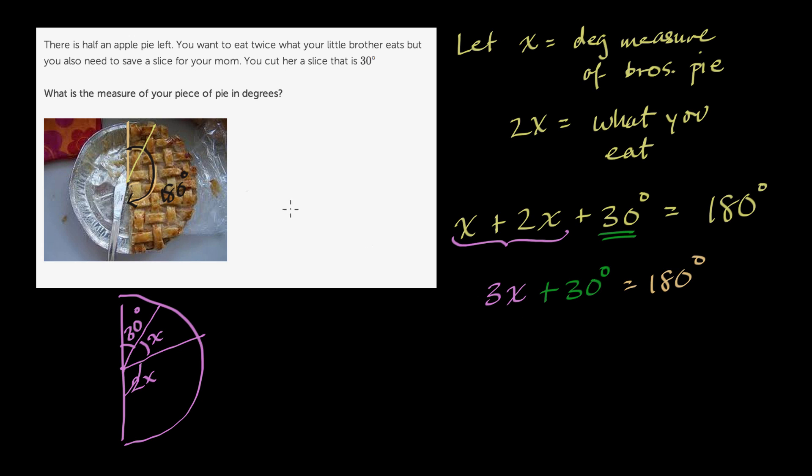Now, to solve for x, we can subtract 30 degrees from both sides. So minus 30 degrees. And then we are left with 3x equaling 180 degrees minus 30 degrees, which is equal to 150 degrees. And now we can just divide both sides by 3, and we're left with x equaling 150 divided by 3, which is 50 degrees. x is equal to 50 degrees.